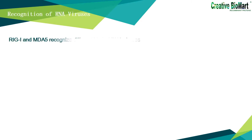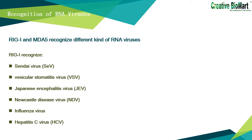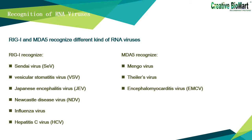RIG-I and MDA5 recognize different kinds of RNA viruses. RIG-I-deficient cells, like cDCs and mouse fibroblasts, cannot effectively produce type 1 interferons and inflammatory cytokines in response to many RNA viruses, including Sendai virus, vesicular stomatitis virus, Japanese encephalitis virus, Newcastle disease virus, and influenza virus. In contrast, MDA5-deficient cells respond normally to those RNA viruses but lack interferon responses to several Picornaviridae, such as Mengo virus, Theiler's virus, and encephalomyocarditis virus, while RIG-I knockout cells are not deficient in responding to these.